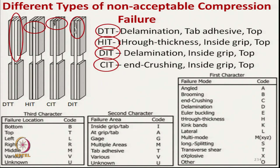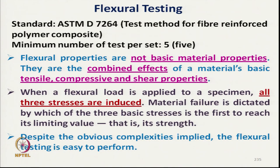The next test is bending or flexural testing, performed as per ASTM D7264 with 5 specimens. Unlike tensile, shear, or compression, flexural failure is not a basic material characteristic — it is the combined effect of tensile, compression, and shear. When a composite bends, tensile stress occurs on the outer side, compression on the inner side, and shear in between.